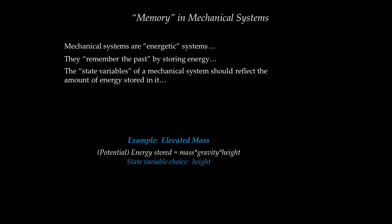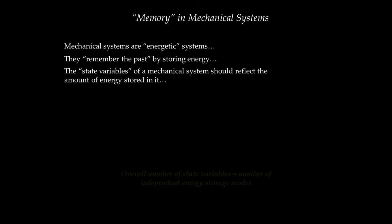In all these examples, we take simple mechanical components and ask how they store energy, then use that to pick a state variable representing the component's memory. For a system with many coupled components, we don't want redundant state variables — for instance, rigid bodies bolted together share the same velocity. The overall number of state variables for a mechanical system should ideally equal the number of independent energy storage modes.